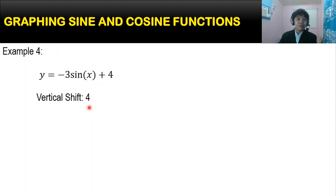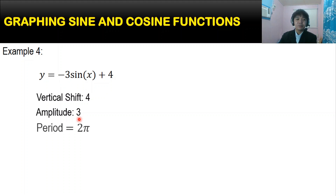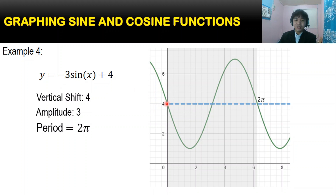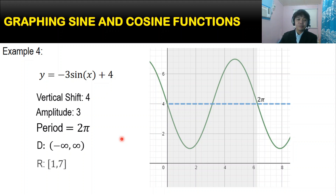For the fourth example, y equals negative 3 sin(x) + 4. The vertical shift is 4. The amplitude is the absolute value of negative 3, which is 3. The period is 2π. In the graph, the graph starts moving downward because we have a negative function, and this is centered on the vertical shift of 4. The domain is the set of all real numbers, and the range is from 1 to 7.